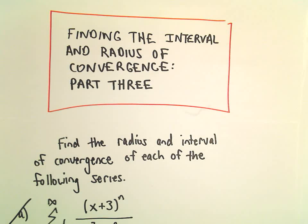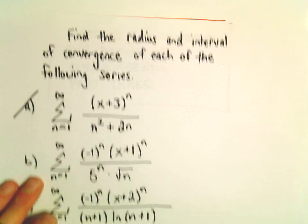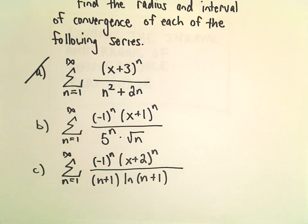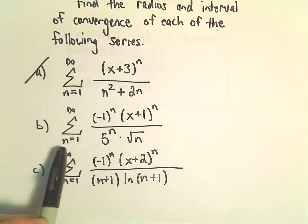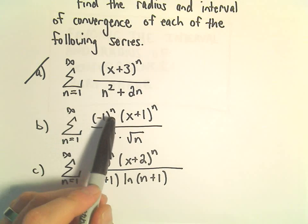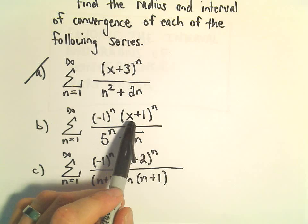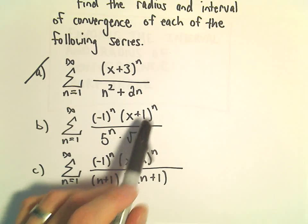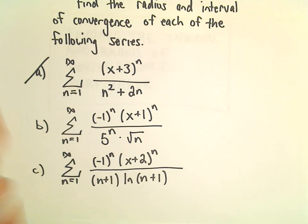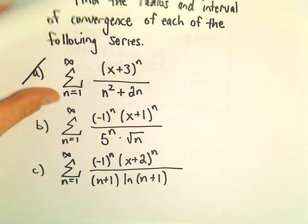Here we're going to look at another example of finding the interval and radius of convergence. In part b, we've got the series from n equals 1 to infinity of negative 1 to the n, times x plus 1 to the n, over 5 to the n times the square root of n.